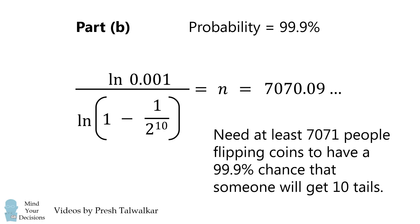Since n is a whole number, we round up. We need at least 7,071 people flipping coins to have a 99.9% chance that someone will get 10 tails in a row.